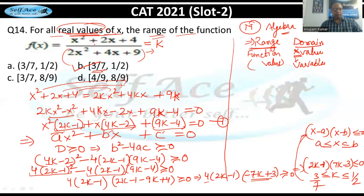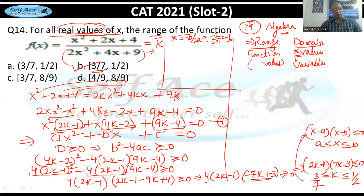Second method: find the minimum value of the numerator quadratic x²+2x+4. The minimum occurs at x = −b/2a = −2/(2×1) = −1. So substitute x = −1 into the full function.